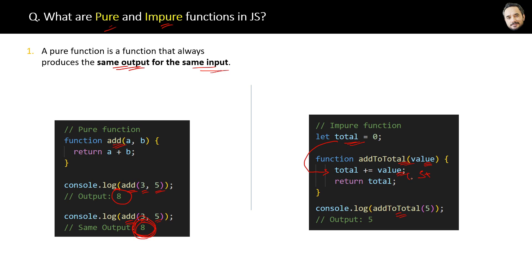So 0 plus 5 equals 5, right? Now the total variable value equals 5. But here is the twist: